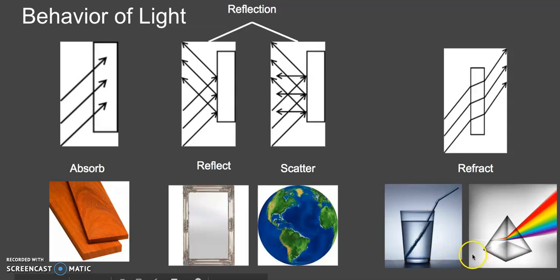The same thing happens with a prism. Light moving through the air hits glass, and that particular type of glass bends the light and we see a rainbow. This is also how we get all kinds of rainbows — if you're outside on a sunny day and you're spraying water and you see a rainbow in that spray, this is where it comes from as well.